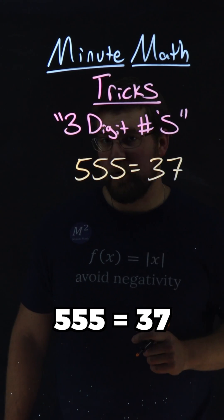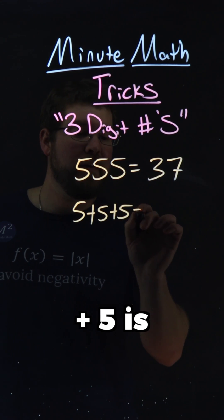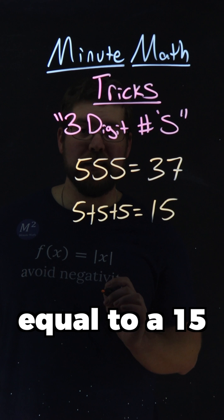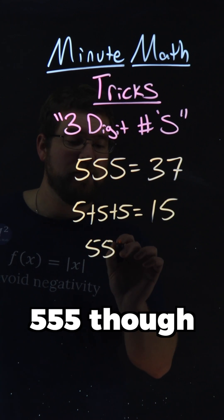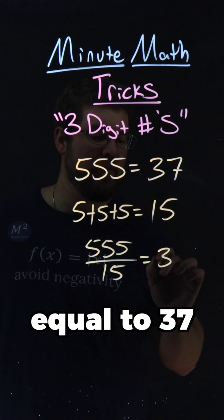555 equals 37. Let's add the 5s. 5 plus 5 plus 5 is equal to 15. 555 divided by that 15 is equal to 37.